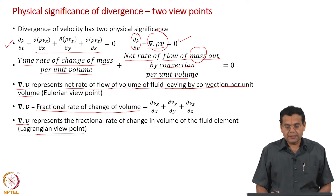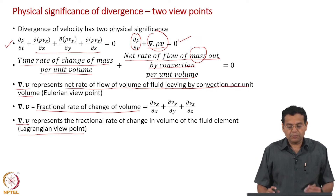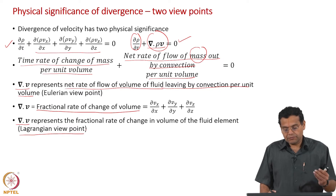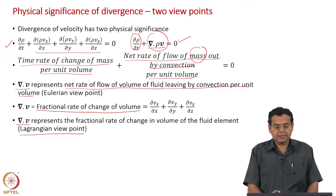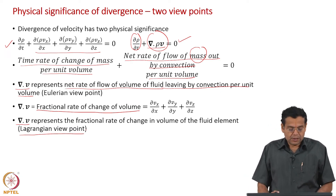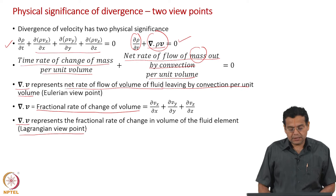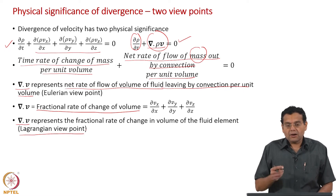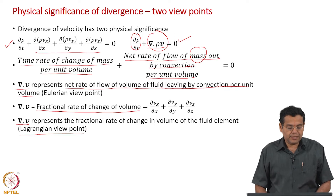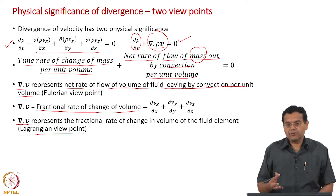This significance of ∇·v is from a Lagrangian viewpoint, while the first one was Eulerian. The Lagrangian viewpoint is the fractional rate of change of volume of a fluid element. It is Lagrangian because, when we discussed normal strain rate, shear strain rate, and volumetric strain rate, all the derivatives are substantial derivatives (capital D/Dt), following the fluid motion. So ∇·v as the fractional rate of change of volume represents what we would observe if we follow a fluid element.